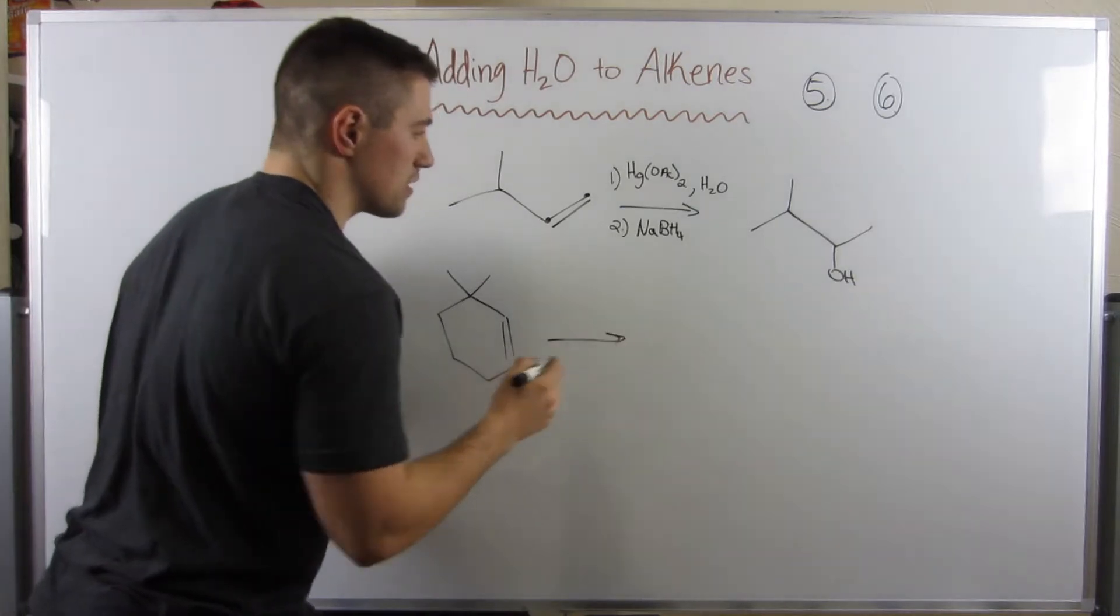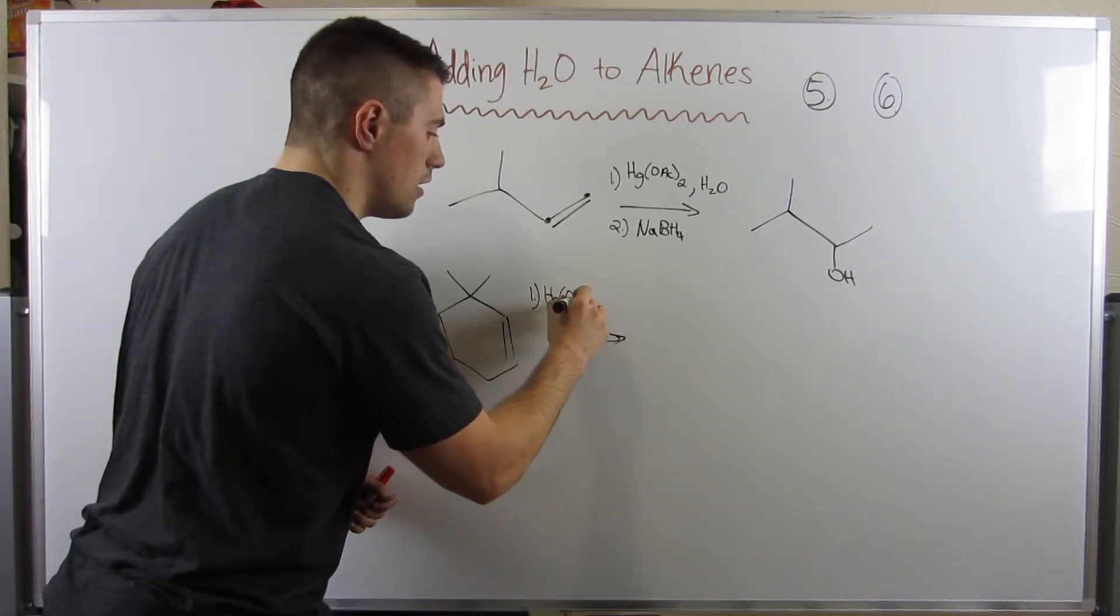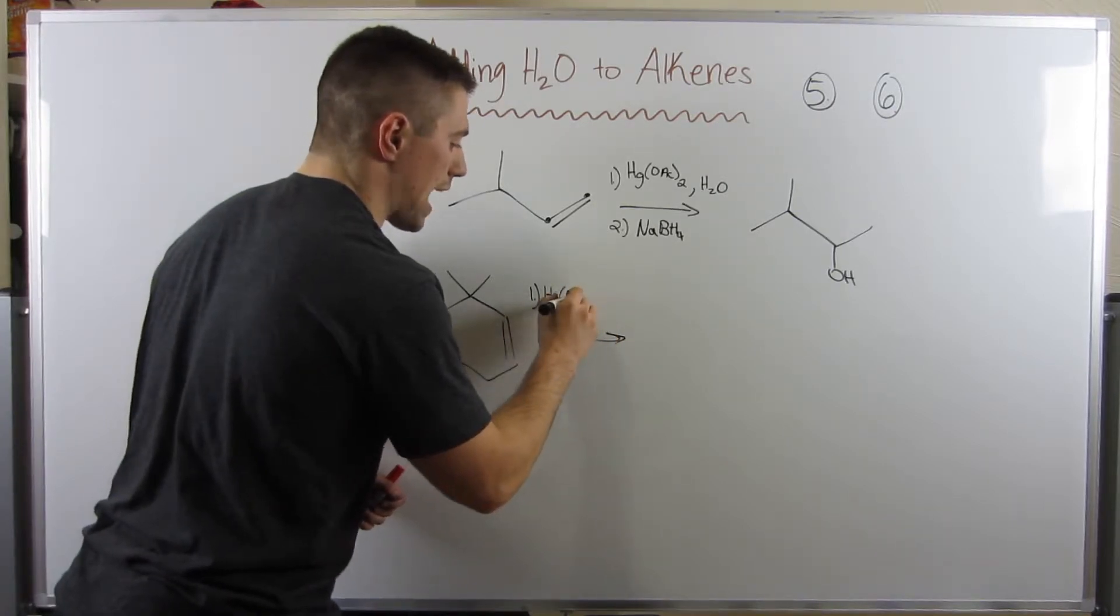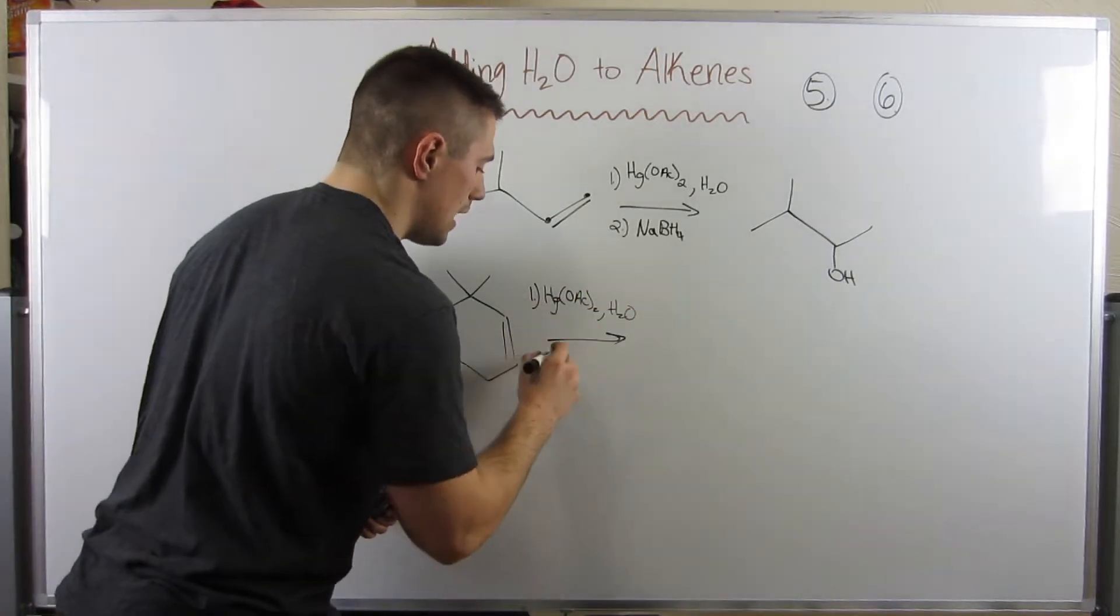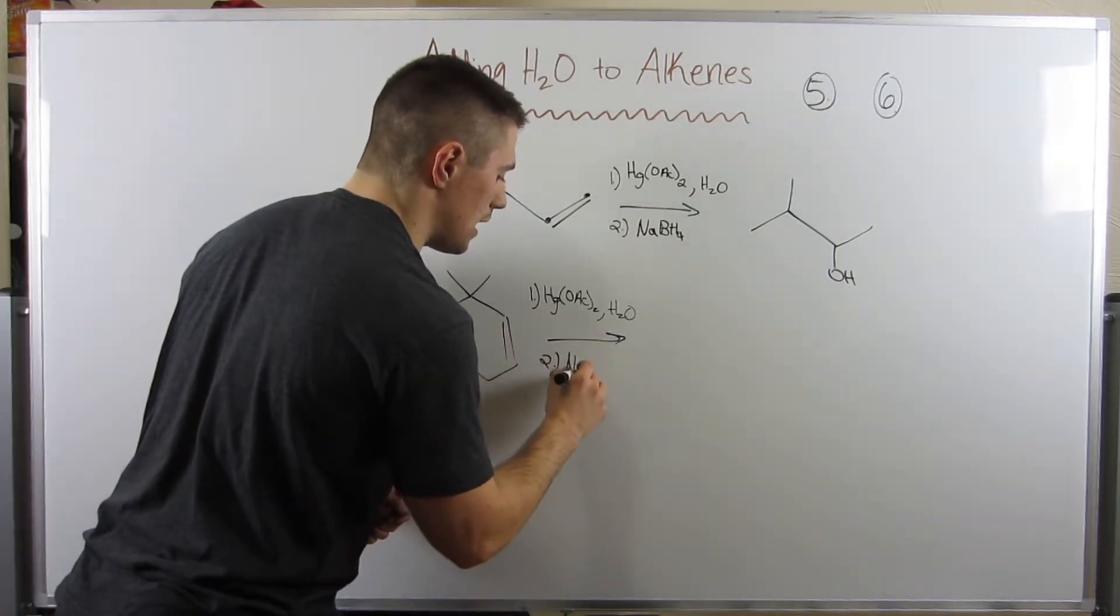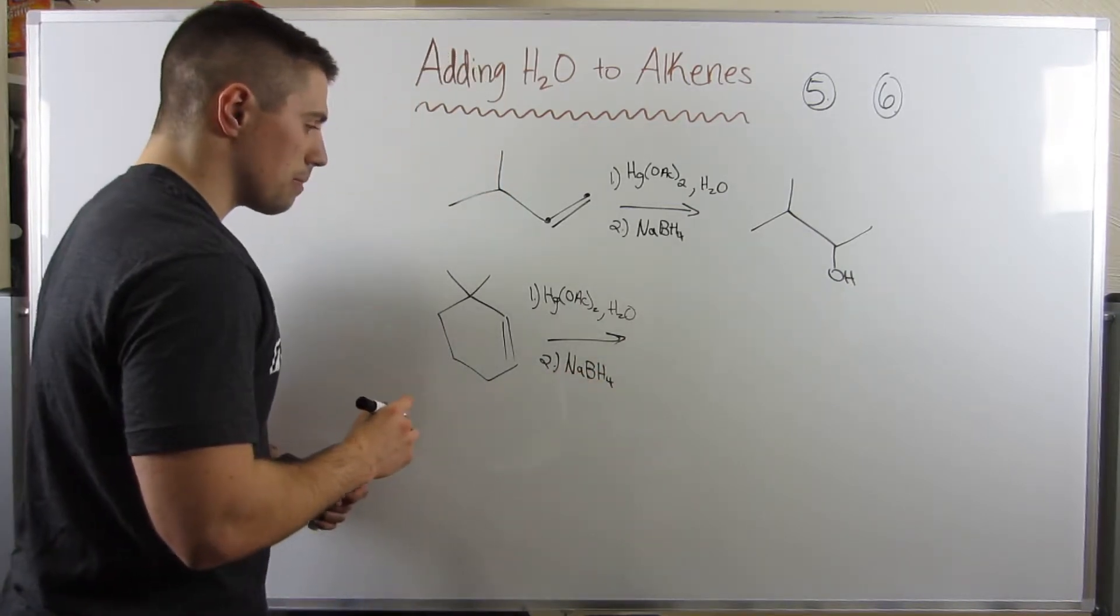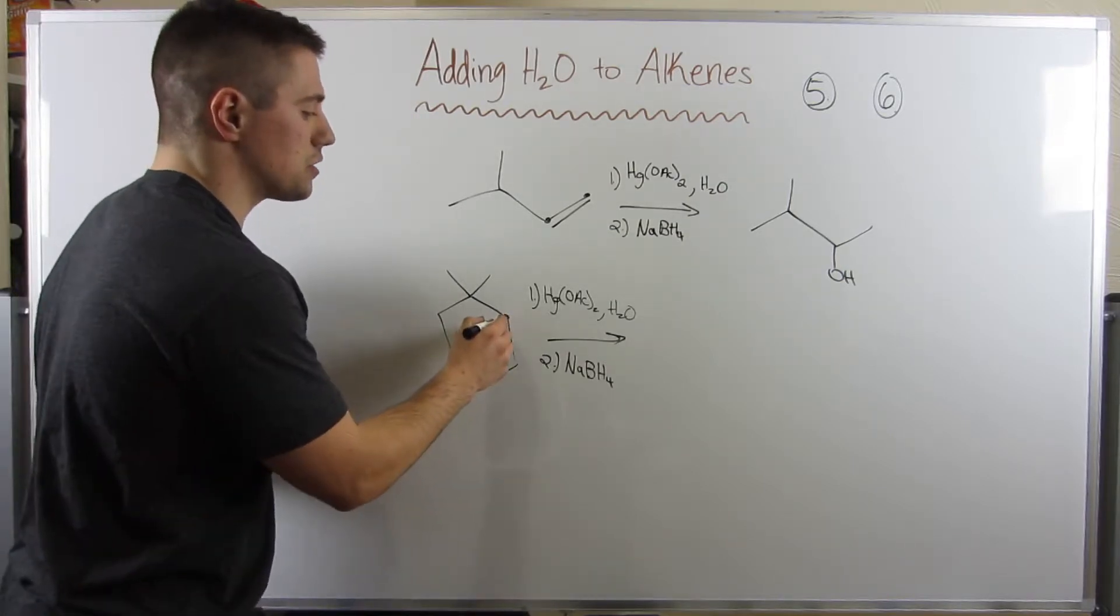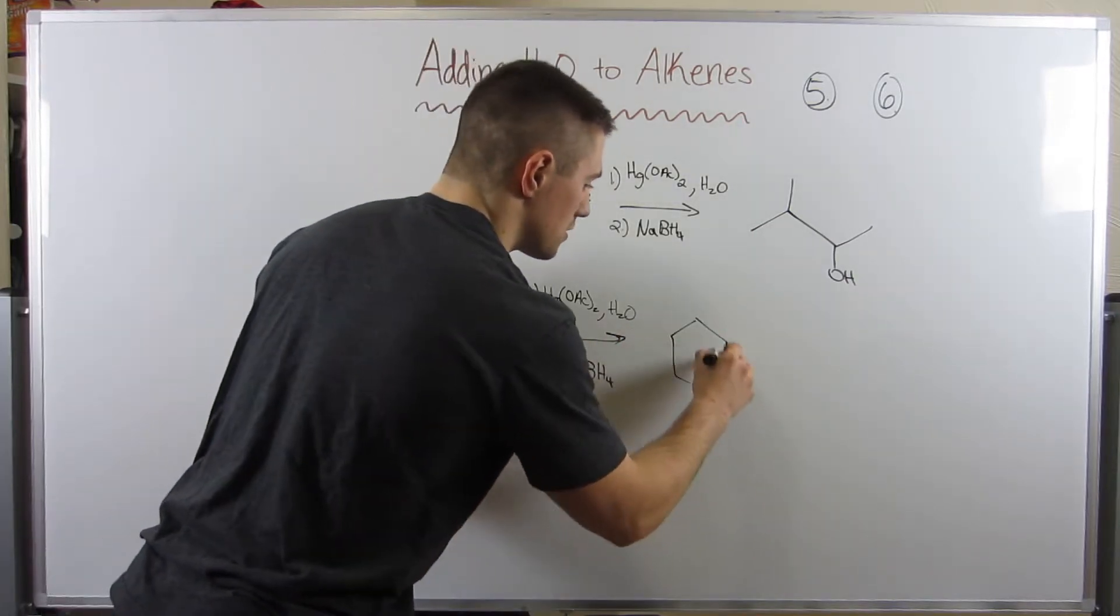Here, I think we did this in the last video, if I throw in some Hg(OAc)2 with some water, and a second step of NaBH4, then you kind of get a mixture of products, right, because these are equally secondary, right?